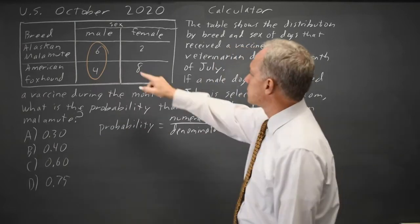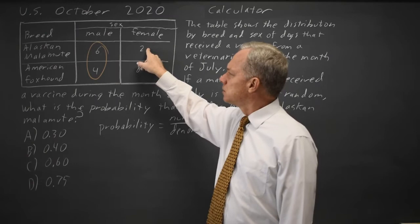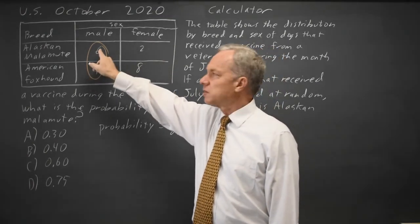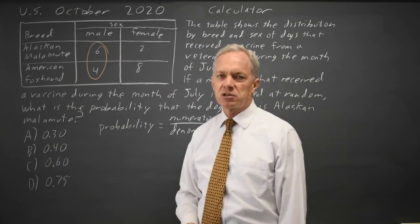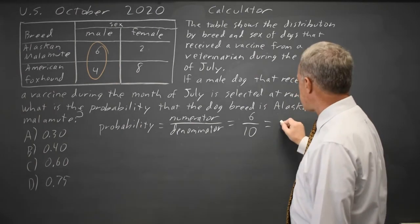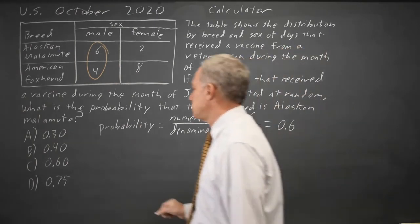We don't count the two female Malamutes over here because we're only interested in the individuals that counted toward our denominator. So there are 6 Malamutes out of the 10 males. So that is 0.6, which is choice C.